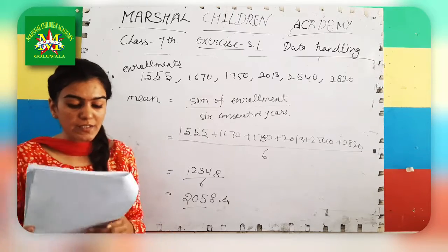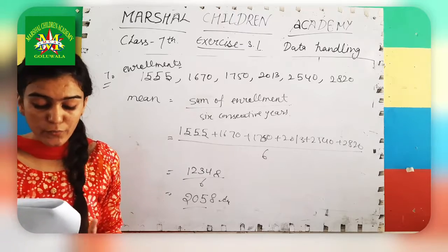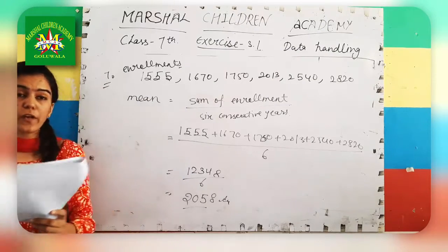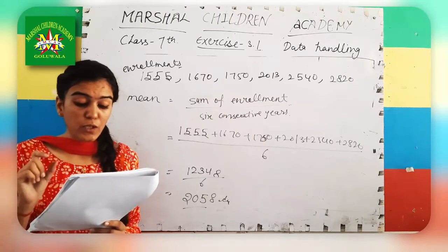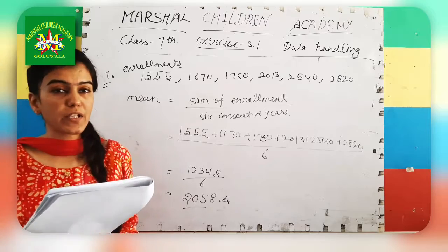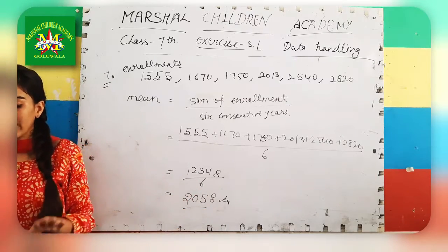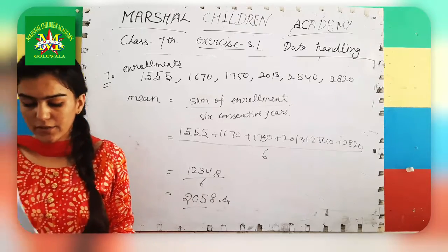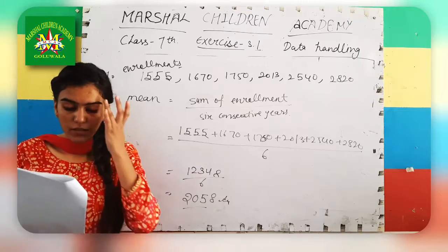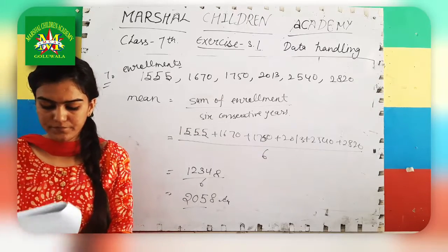Your 8th question is also very easy and similar to questions 5 and 6. You should try it by yourself — it is a very simple question. In this question you have 7 days (1 week) with rainfall data. You need to find the lowest and highest range of rainfall and how many days rainfall was less than the mean rainfall. Try it yourself, and in your next lecture I will teach question 8. Thank you, students.